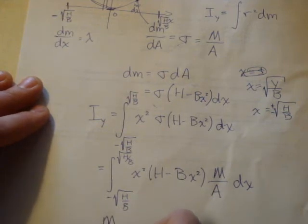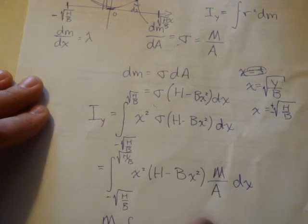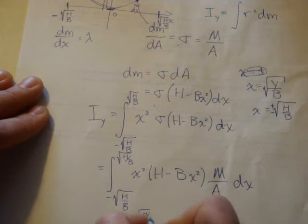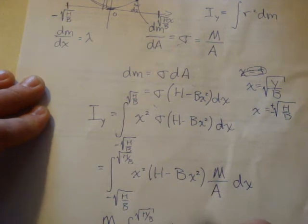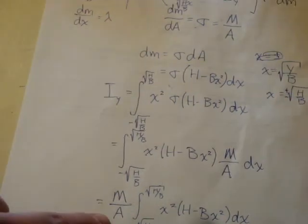So we get mass over the area, from the limits of x, and we have x squared times h minus b x squared dx. In the next video, I'll demonstrate a little bit how we're going to solve A.